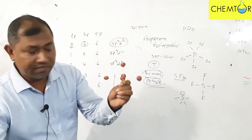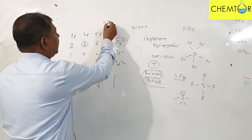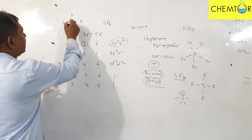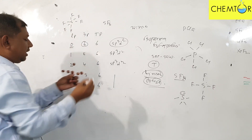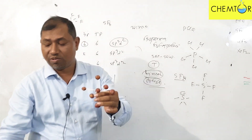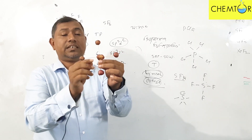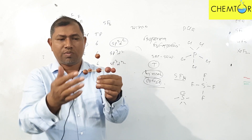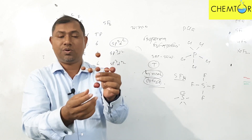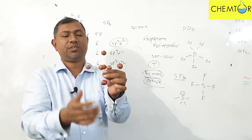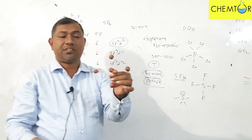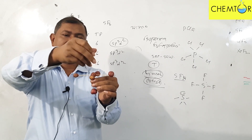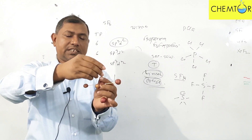We have SF6, sulfur hexafluoride. Sulfur hexafluoride is connected to 1, 2, 3, 4, 5, and 6 fluorine atoms. This is sulfur hexafluoride with sp3d2 hybridization. The shape is octahedral, meaning a double pyramid. When it comes to the lone pair, it will go to the equatorial position.